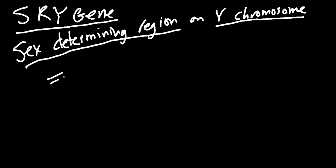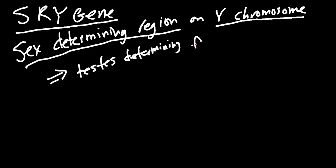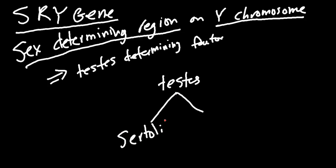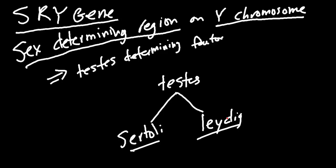Your SRY gene will produce testes-determining factor. Testes-determining factor will develop your testes in the male, and your testes have two main cell types. You're going to have Sertoli cells, which are kind of like your nurse cells — they're going to nurse your sperm and take care of things, but they're also going to produce a very important hormone during embryogenesis. Then you've also got Leydig cells, which are your manly cells — the Leydig cells produce testosterone.